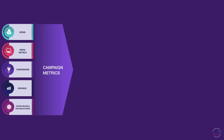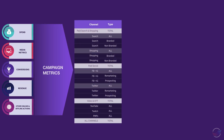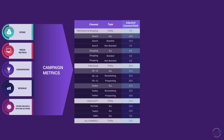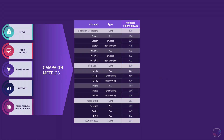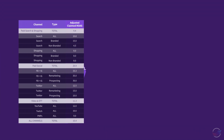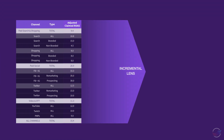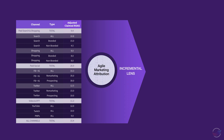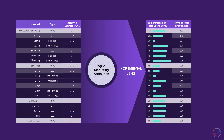Examining the platform's claimed return on ad spend, we see that most platforms take more credit for conversions than what is reality. To eliminate duplication and provide you the true incremental benefit of each channel, we apply our agile marketing attribution models, adjusting each platform's claimed return on ad spend down to the portion that is truly incremental.